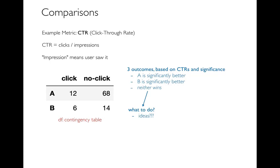When you do these tests looking at both the metric — which is CTR — and significance, there are really three outcomes: A is significantly better, B is significantly better, or neither wins. In the case where neither wins, we have to think about what we're going to do. Take a moment to think about that yourself — what would you do when neither is statistically better?